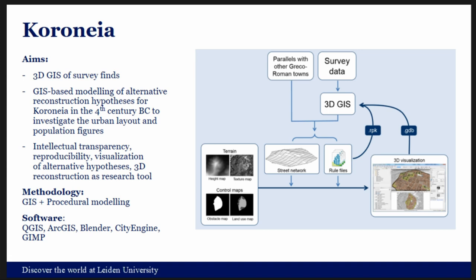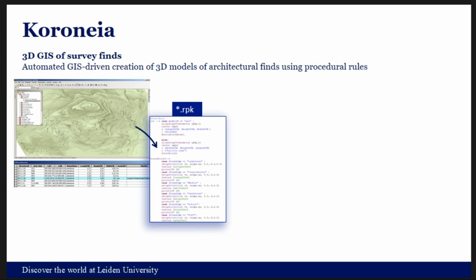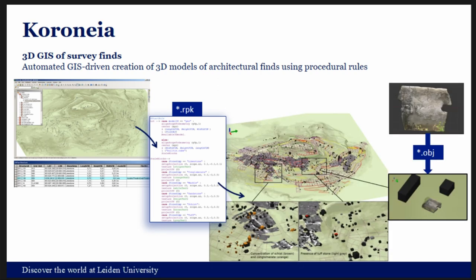I used a combination of GIS and procedural modeling. The starting point for the 3D GIS of survey finds were GPS points recording the architectural finds on the hill. Those points had a linked database with information about the actual measurements and dimensions of these blocks. I wrote a quick rule file that interrogates this database and scales the points according to the real dimensions on the field, giving a more intuitive way of looking at the data, showing concentrations of particular types of stones.